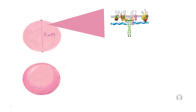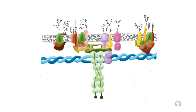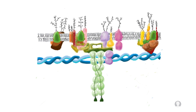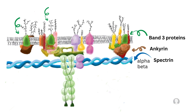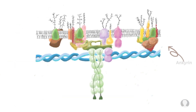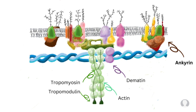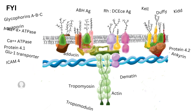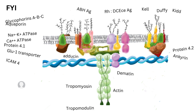To understand hereditary spherocytosis and hereditary elliptocytosis, let's focus at the molecular level of the red blood cell membrane. We see the phospholipid bilayer with cholesterol and transmembrane proteins, as well as the underlying cytoskeleton. Key features include band 3 transmembrane proteins bound to ankyrin, which anchors the transmembrane proteins to spectrin — which has alpha and beta spirals. Spectrin is also bound to dematin, tropomyosin, tropomodulin, and actin. Notably, some of these proteins are found in the thin filaments of muscle. While the molecular biology of the RBC membrane is complex, let's focus on the essential proteins for our topic.